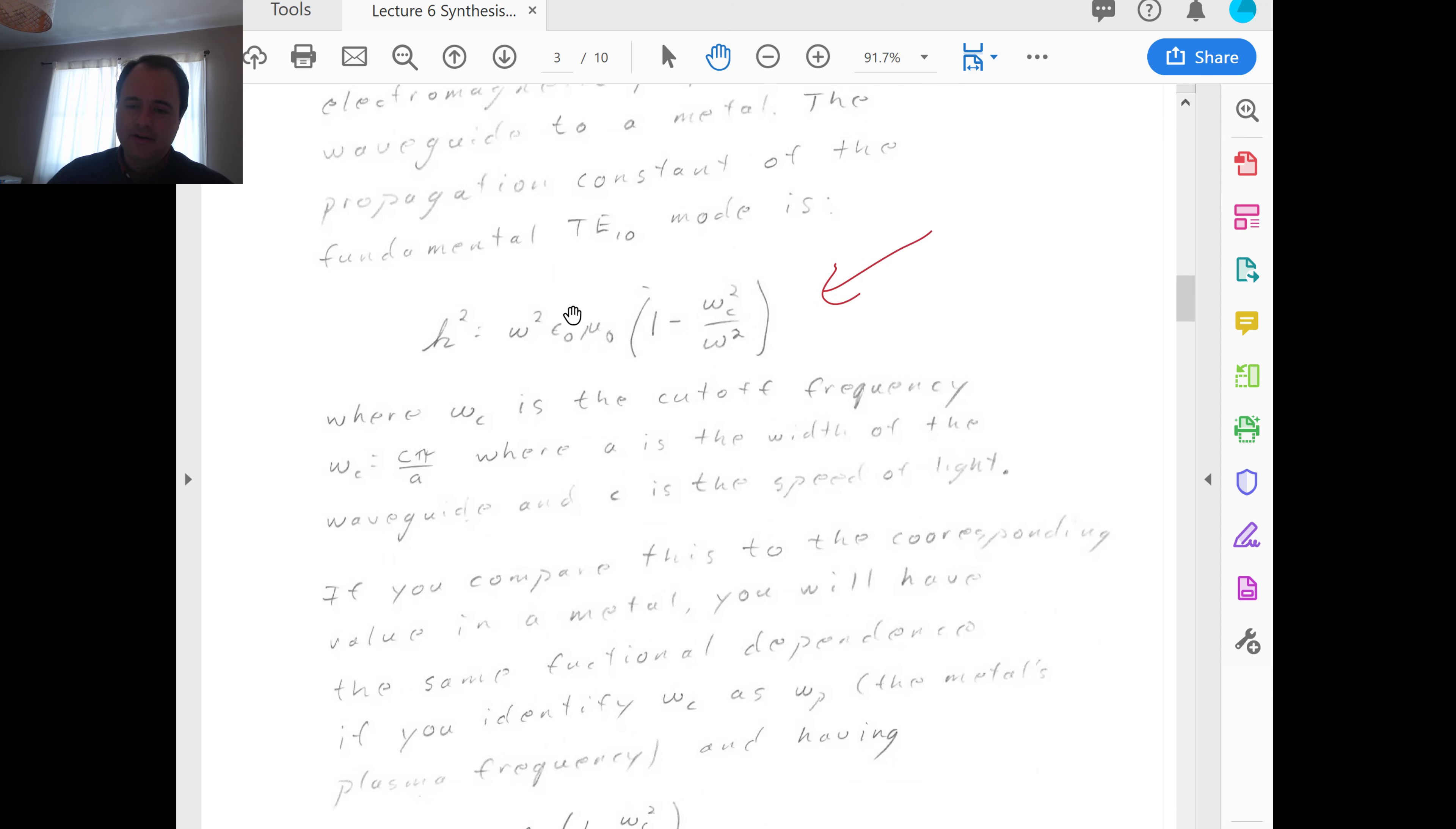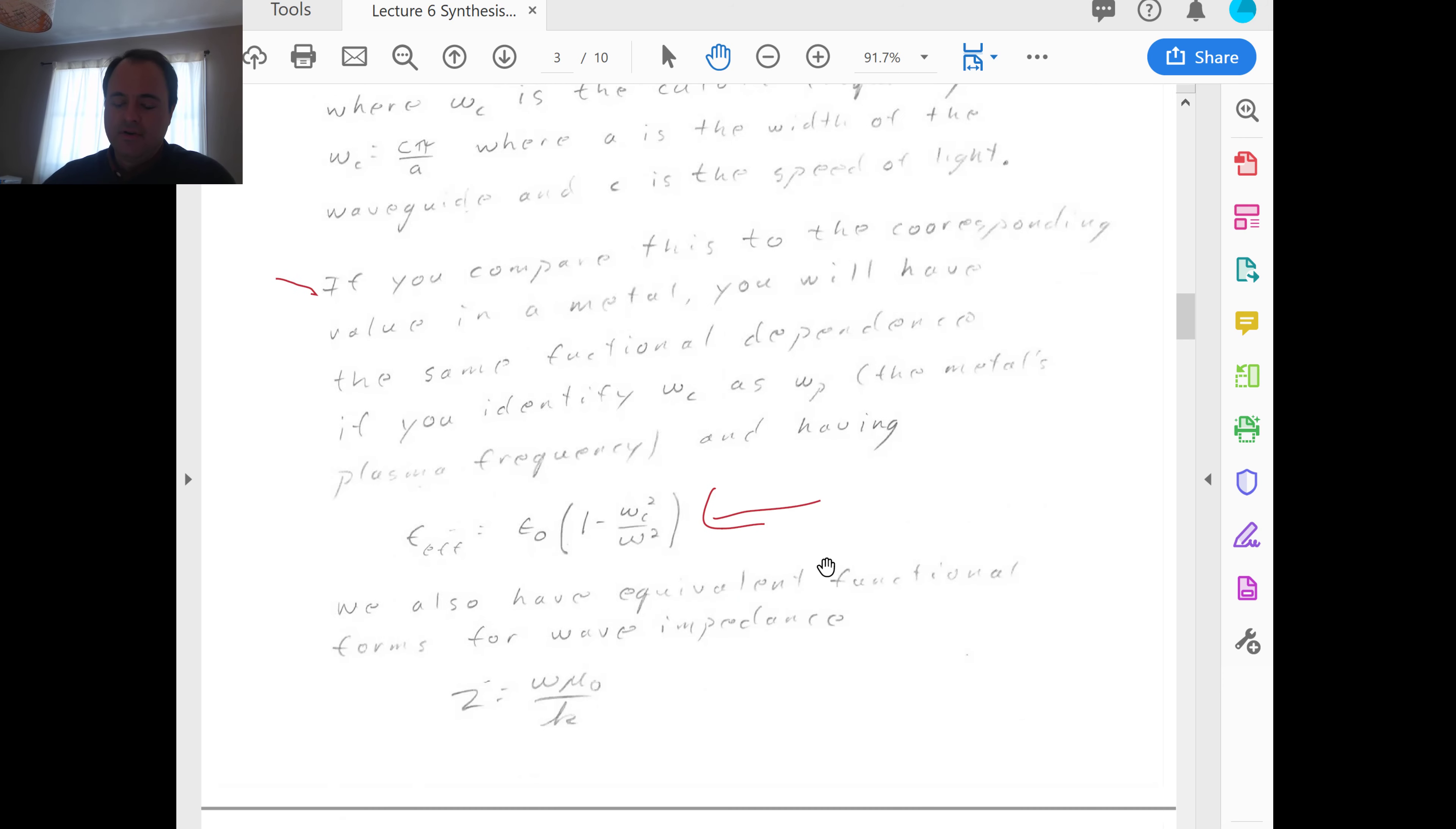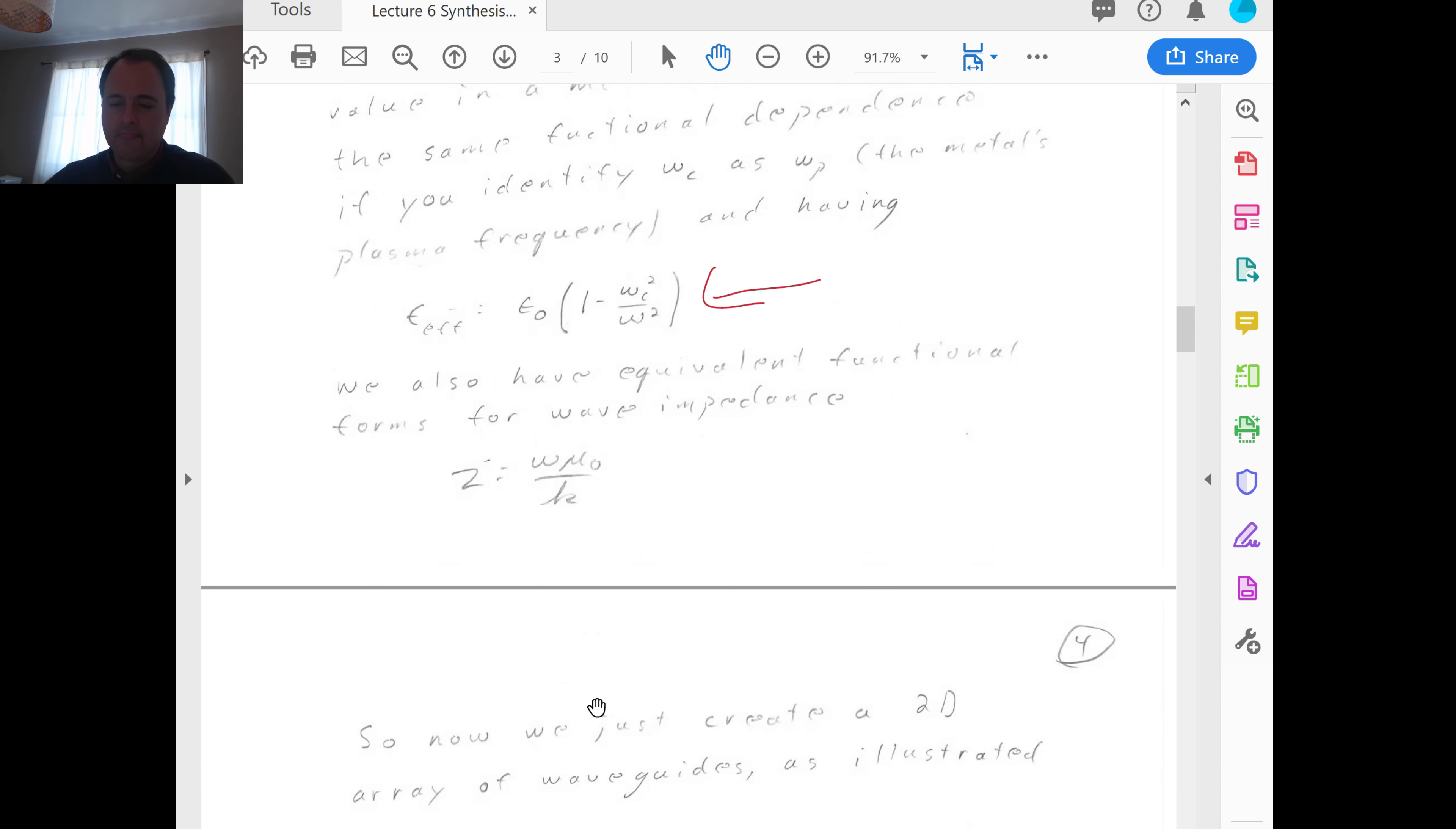The propagation constant of the fundamental TE10 mode is given by this, where omega c is the cutoff frequency, and it depends on the width of the waveguide a. And so, this epsilon times the quantity 1 minus omega c squared over omega squared is highly suggestive, because it is very similar to the Drude model of the dielectric constant of a metal, where omega c is, in a metal, omega p, the plasma frequency. So if you compare this to the corresponding value in a metal, you will have the same functional dependence, if you identify omega c with omega p, namely the metal's plasma frequency.